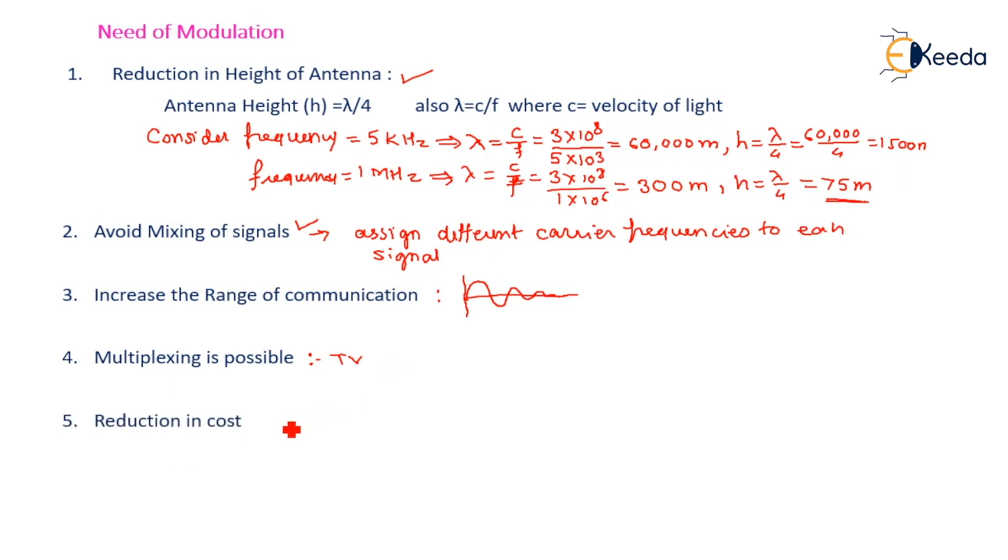Fifth, reduction in cost. Obviously with the help of modulation, substantially the cost will be reduced. And last, improved quality of reception. Due to modulation, the noise is minimized - the effect of noise is lower or can be reduced to a greater extent with the help of modulation. So these are all the needs of modulation.